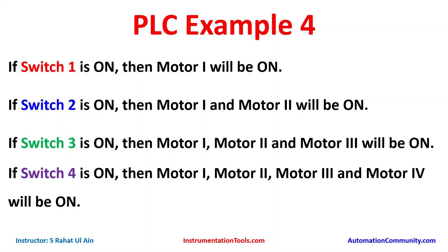Example 4: If switch 1 is on, then motor 1 will be on. If switch 2 is on, then motor 1 and motor 2 will be on. If switch 3 is on, then motor 1, motor 2, and motor 3 will be on. If switch 4 is on, then motor 1, motor 2, motor 3, and motor 4 will be on. So here we have four switches and four motors.